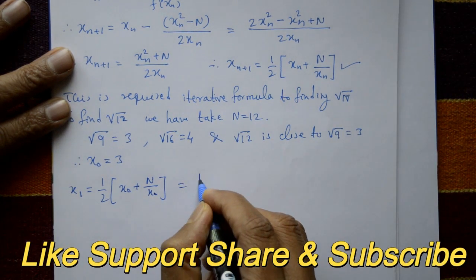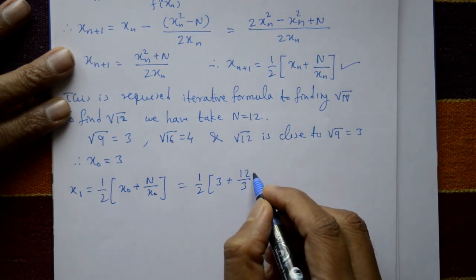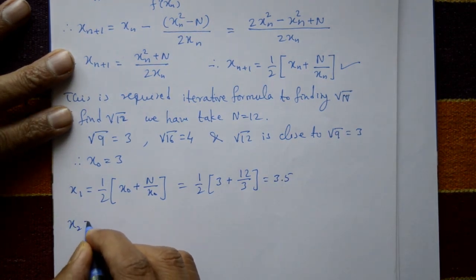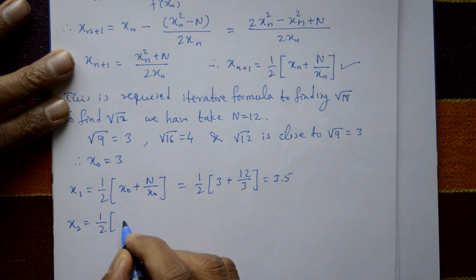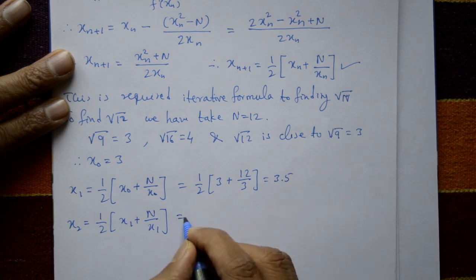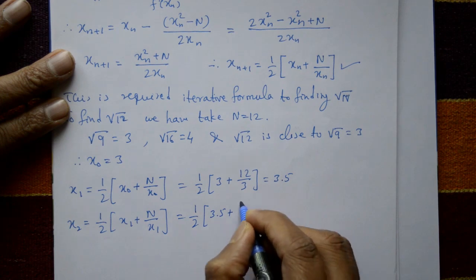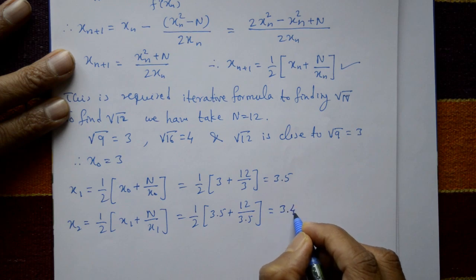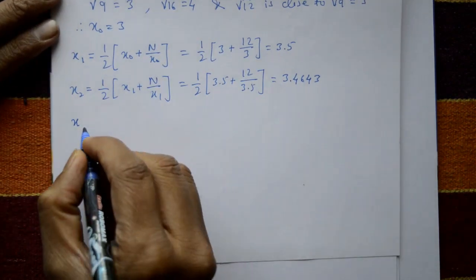First iteration: put n = 0 into the formula. x₁ = ½(x₀ + 12/x₀) = ½(3 + 12/3) = 3.5. Second iteration: x₂ = ½(x₁ + 12/x₁) = ½(3.5 + 12/3.5) = 3.4643.